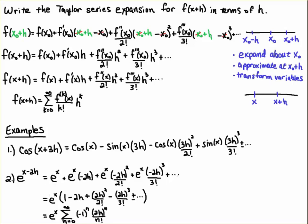I'm going to factor out the e to the x to simplify this, and we get 1 minus 2h. It doesn't matter. The minus here, when it's squared, it becomes a plus, then a minus 2h cubed, because the minus 1 cubed is minus 1. And then you get a plus or minus dot dot dot.